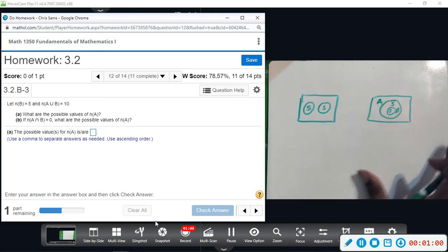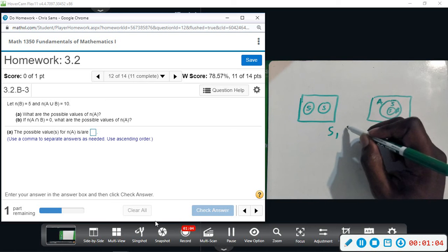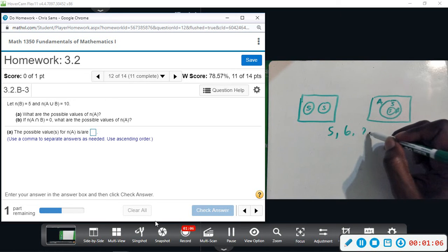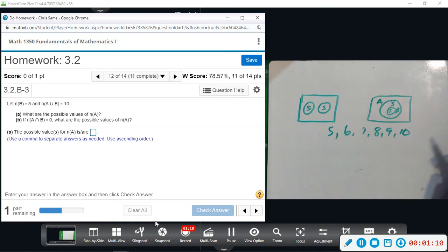And then anything in between, so possibilities for A will be 5, 6, 7, 8, 9, and 10.